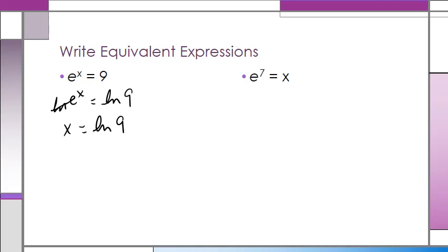That seems simple enough. Over here on the right side, we've got E raised to the power of 7 equals X. Again, we're going to take the natural log of both sides. The natural log and natural base E cancel, and we're left with 7 equals ln of X. This is all we need to do to write exponential equations in logarithmic form.